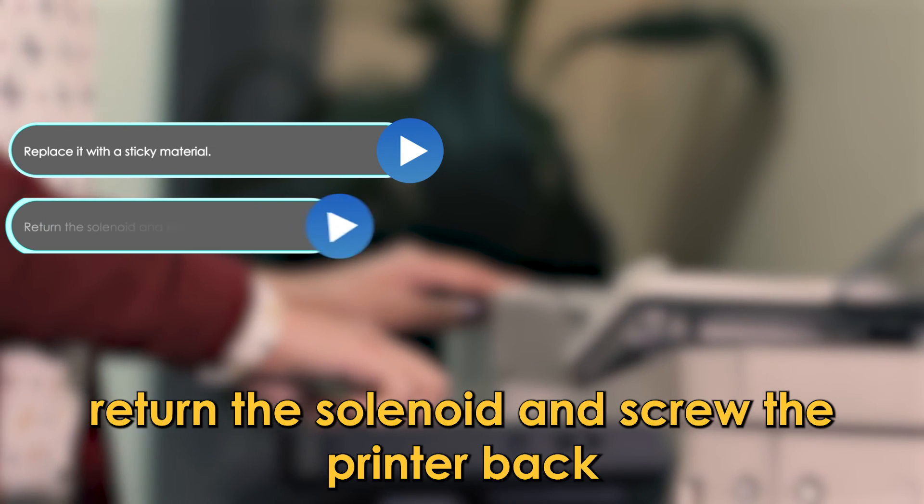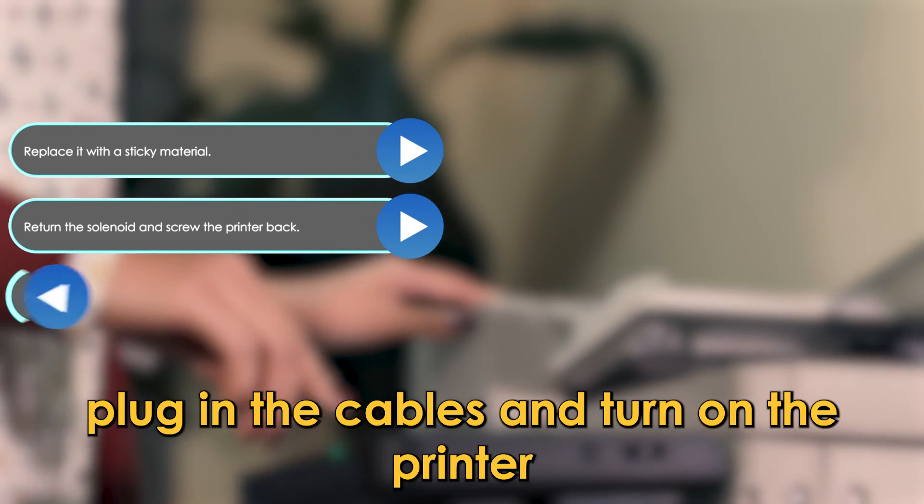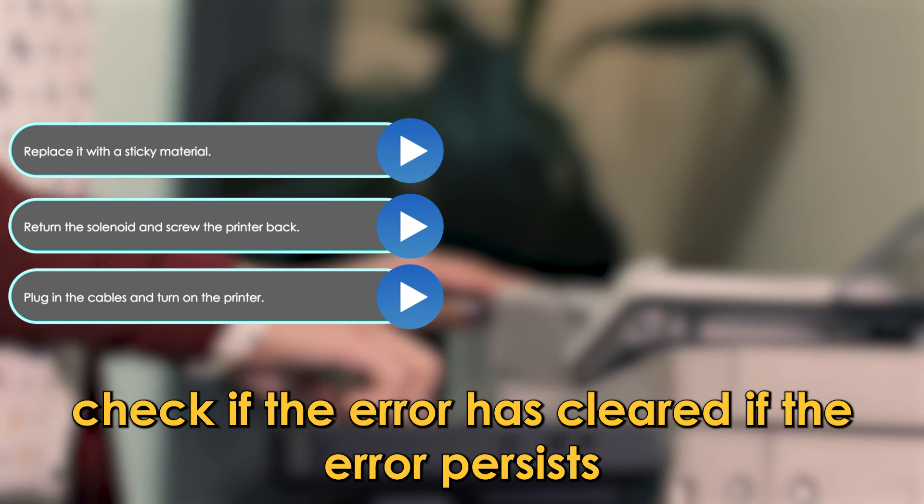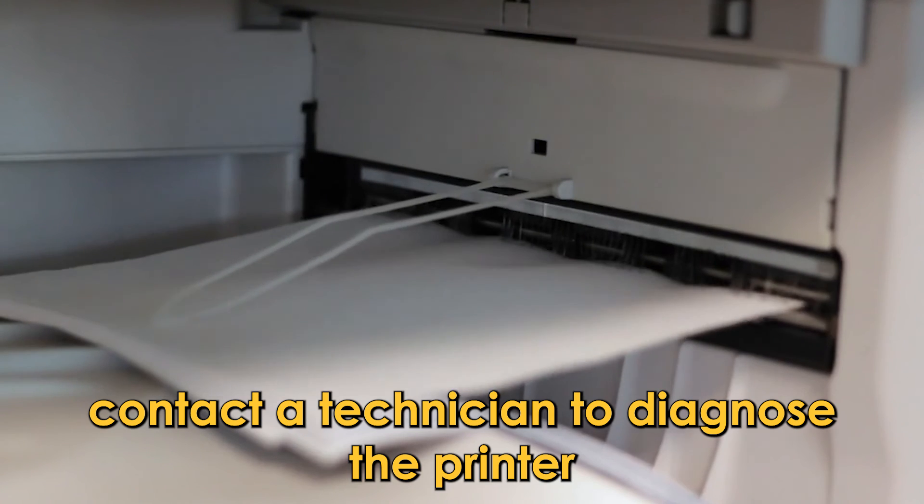Return the solenoid and screw the printer back. Plug in the cables and turn on the printer. Check if the error has cleared. If the error persists, contact a technician to diagnose the printer.